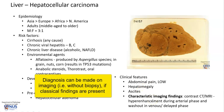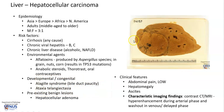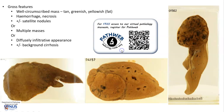There are also very characteristic imaging findings. In particular, on contrast CT or MRI, there is hyperenhancement during the arterial phase and washout in the venous phase. This is because the tumor draws its blood supply from the hepatic artery, rather than the portal vein as in the rest of the non-neoplastic liver.